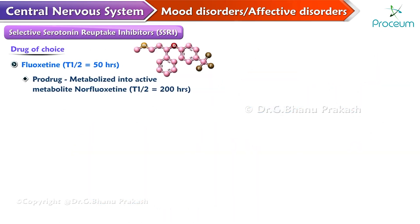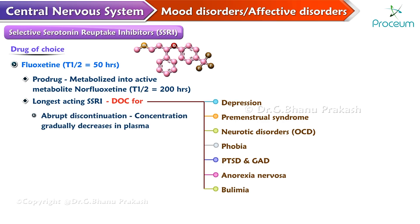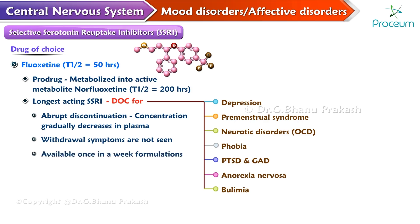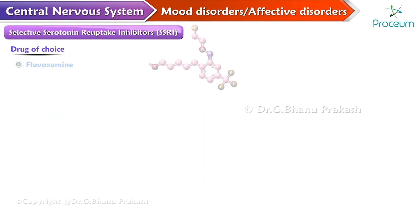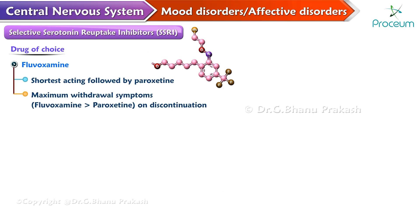Fluoxetine is a pro-drug metabolized into an active metabolite, norfluoxetine. Hence fluoxetine is the longest-acting SSRI and is the preferred SSRI for all conditions mentioned so far. Being the longest-acting, on abrupt discontinuation its concentration gradually decreases in plasma, and hence withdrawal symptoms are not seen with fluoxetine. Once-a-week formulations are available only for fluoxetine. Paroxetine is the shortest-acting SSRI, and hence it is associated with maximum withdrawal symptoms on discontinuation.